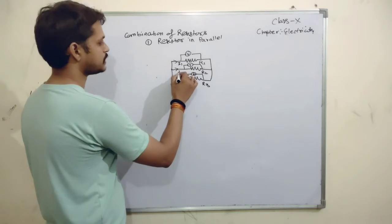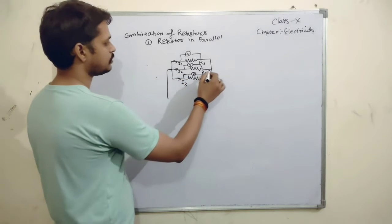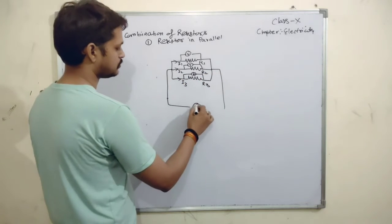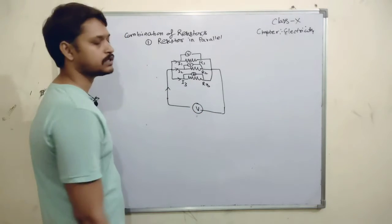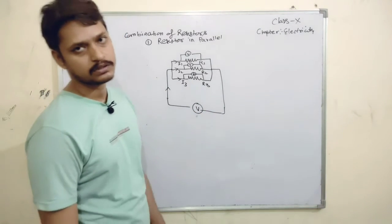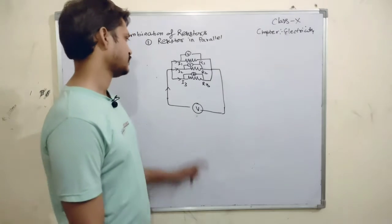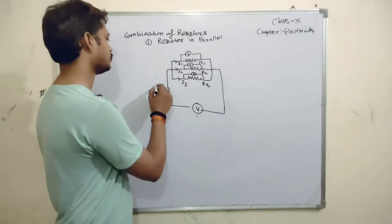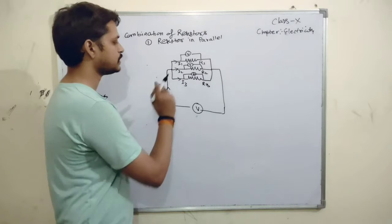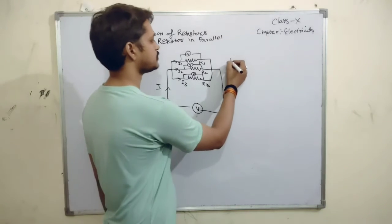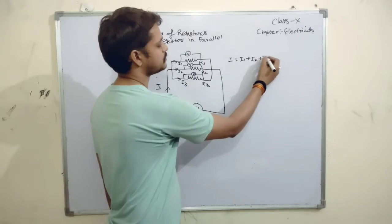In first resistors say I1, second I2, third is I3. All three are connected across a source having potential V. Let I be the net current passing through the circuit. It is clearly seen that total current in the circuit is capital I which is further dividing into I1, I2 and I3. We can write as I is equal to I1 plus I2 plus I3.